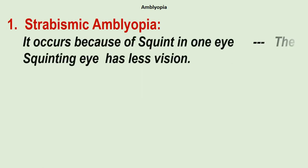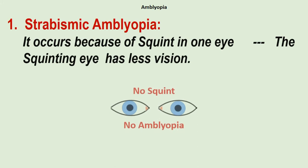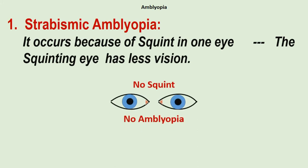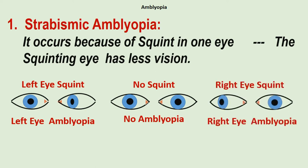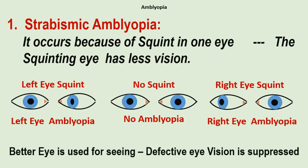Strabismic amblyopia occurs because of squint in one eye — the squinting eye has less vision. For example, in the middle picture there is no squint, so no amblyopia. In the left picture, the right eye is straight but the left eye has squint, so the left eye has amblyopia. In the right picture, the left eye is straight but the right eye has squint, so the right eye has amblyopia. This is because the better eye — the non-squinting eye — is usually used for seeing, and the squinting eye's vision is suppressed to avoid diplopia or double vision.